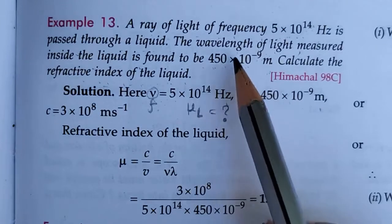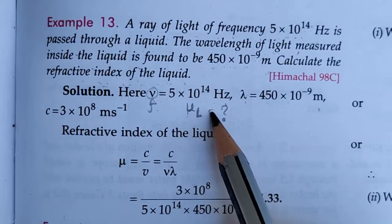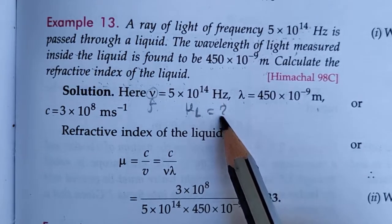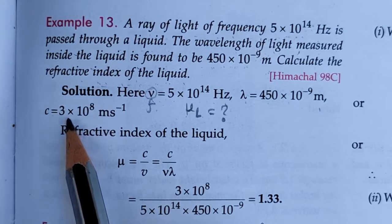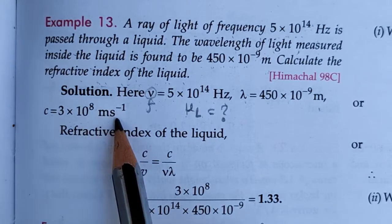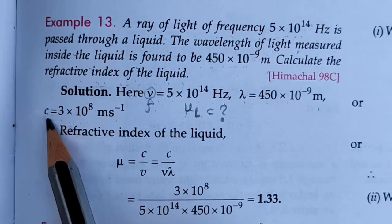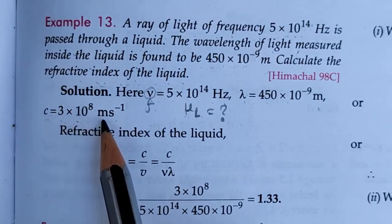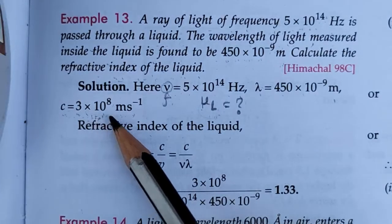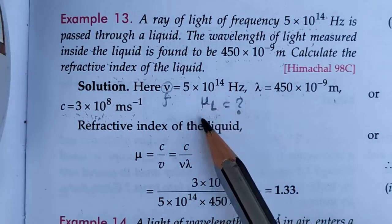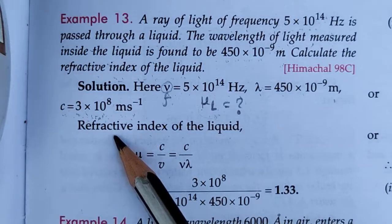We have to find the refractive index of the liquid, mu liquid. We know the velocity of light in vacuum c equals 3 × 10⁸ meter per second — this is not given in the question but we know it. We use the formula of refractive index mu equals c by v.